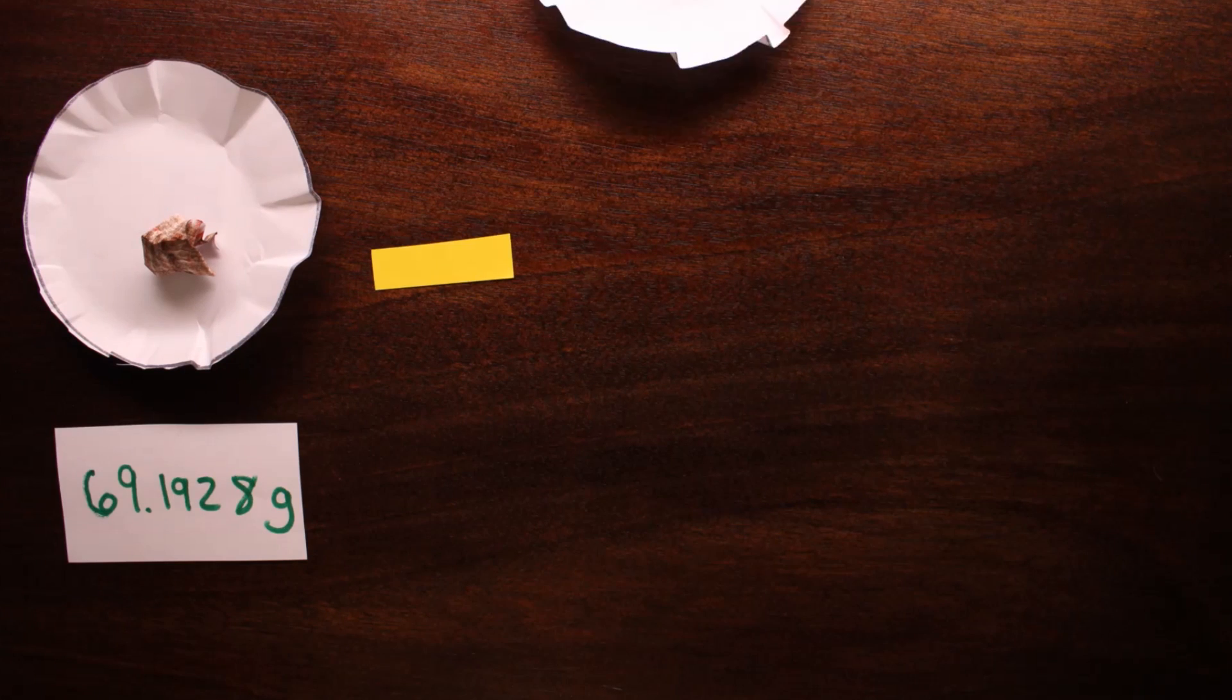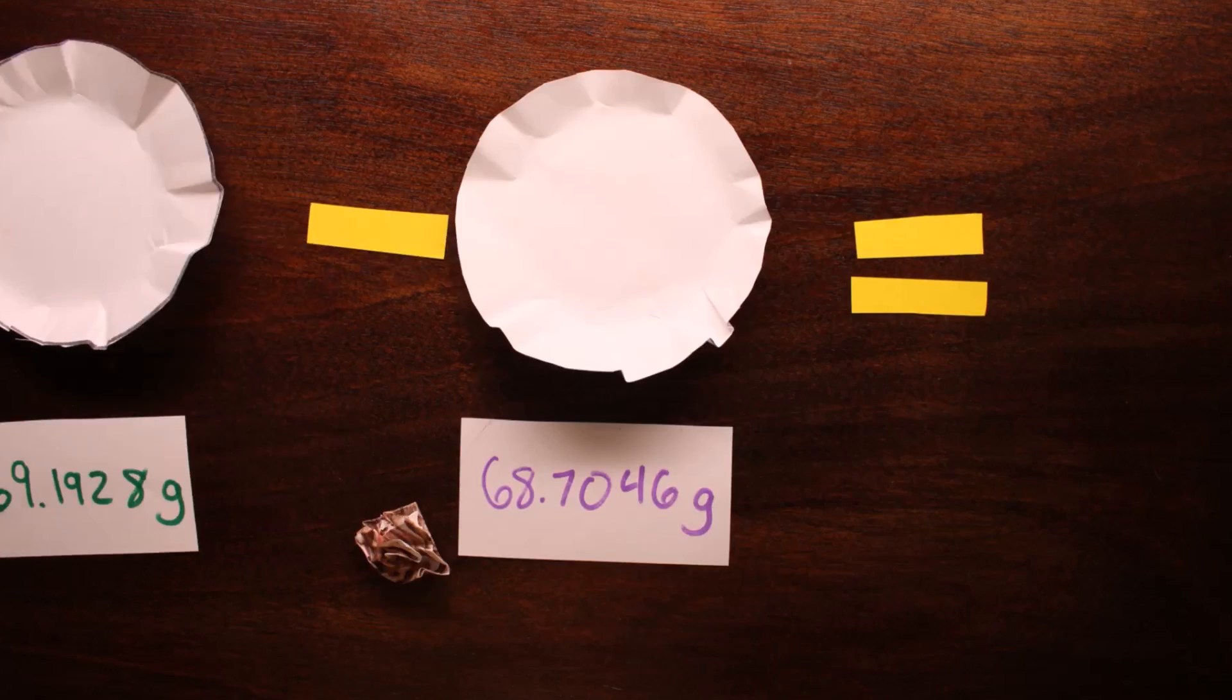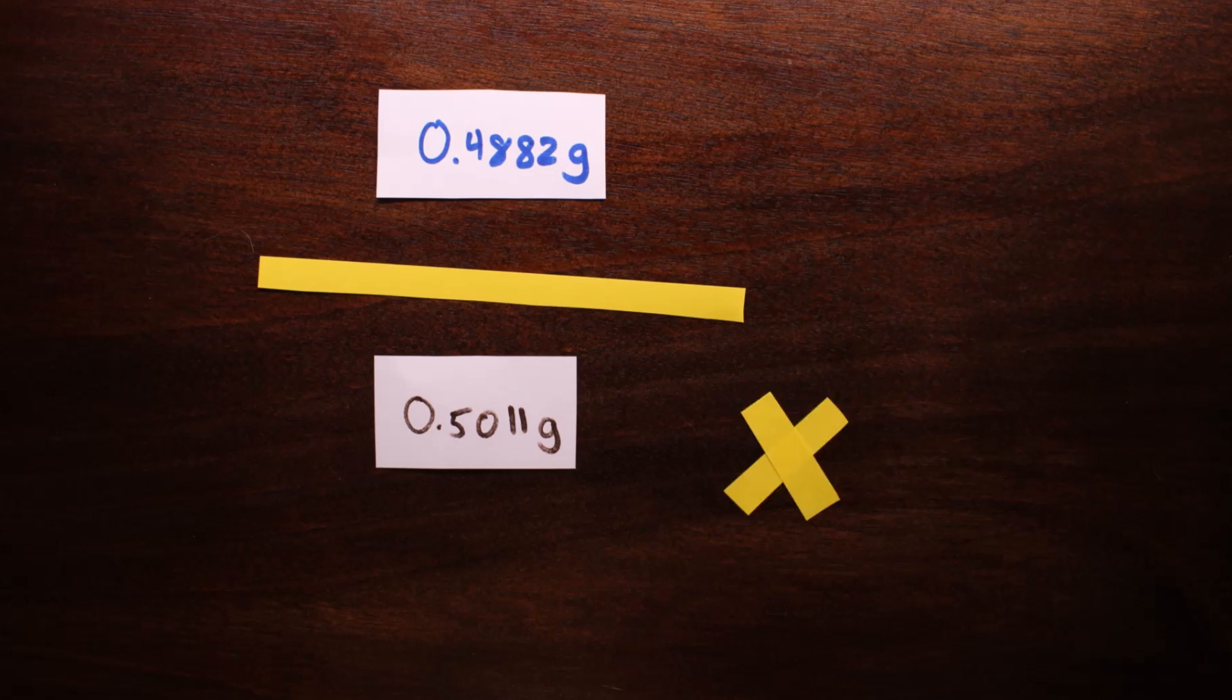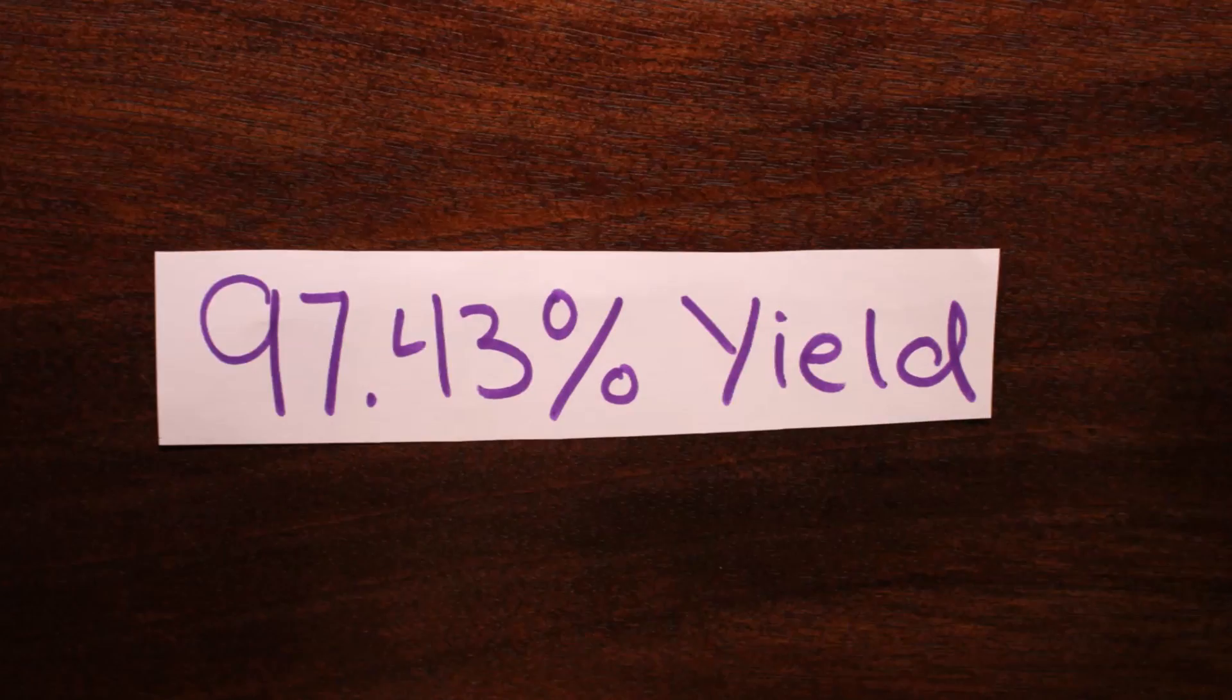Using a recovery mass of 0.4882 grams, we calculated a 97.3% yield from our original 0.5011 grams of copper.